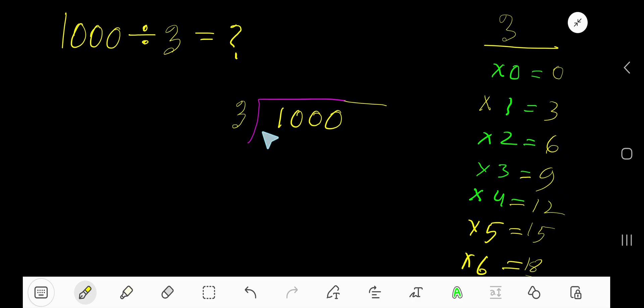9 plus 3 is 12, like this. 3 goes into 1 how many times? Since 1 is less than 3, 0 times. 0 times 3 is 0. Subtract 1, bring down this 0, so now you have 10.